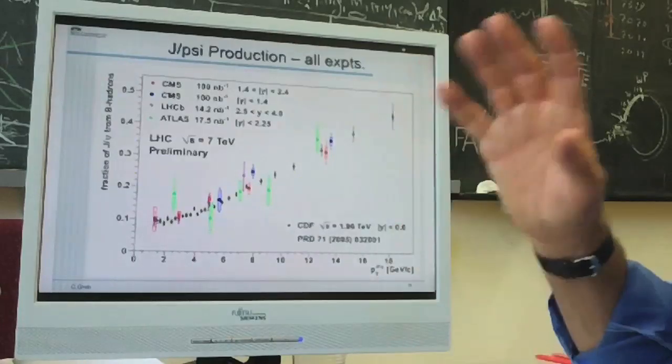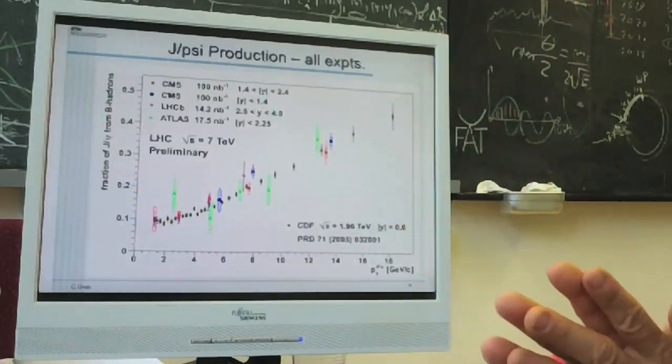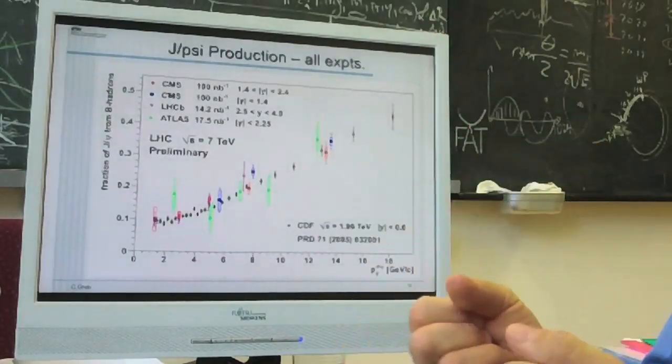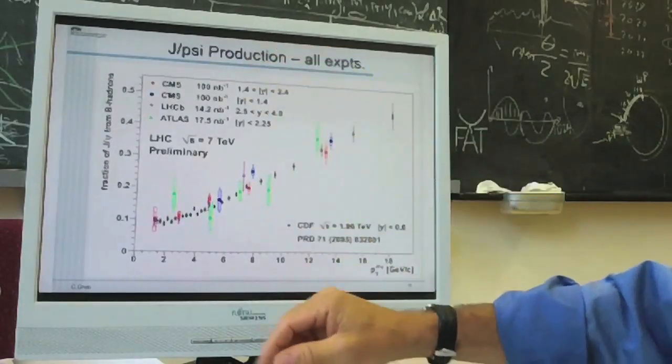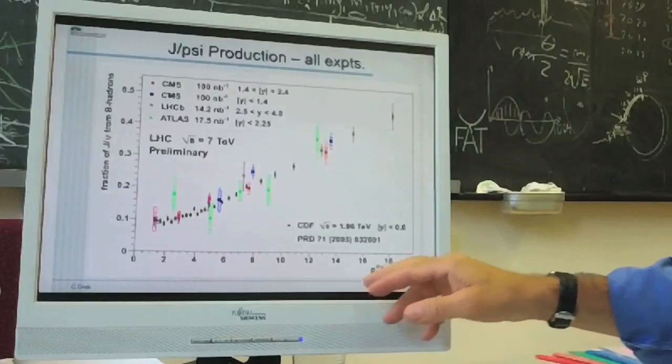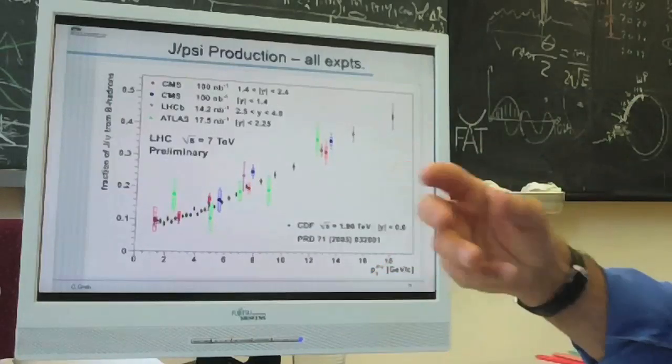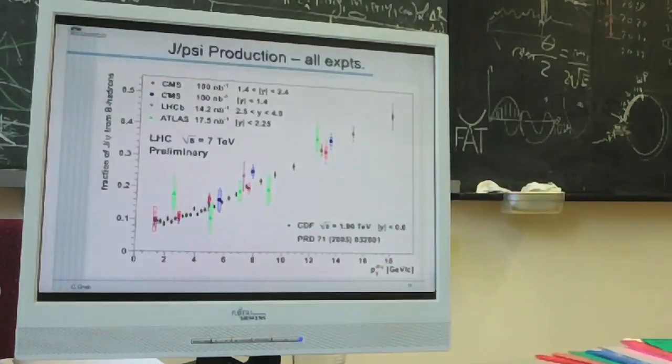But then, of course, not just looking for Higgs. We have also done standard model measurements, right? You have to understand to detect it in detail. So you use processes that we know, like jet production. And then you look if the dependency on the transverse momentum is what we expect from the models.